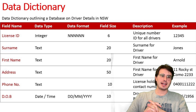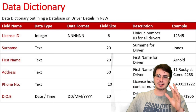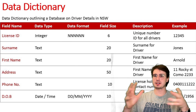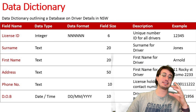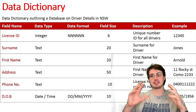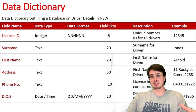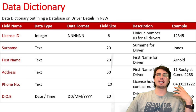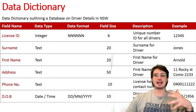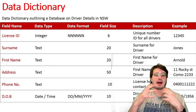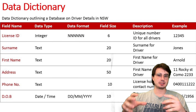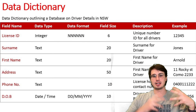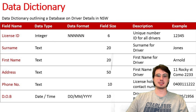Hey y'all, Data Guy here, and today I'm coming at you with yet another viewer request video, this time uncovering and going through the concept of a data dictionary. Data dictionaries are really the idea of having a dictionary that has all the information around your data — a centralized authoritative reference that describes the meaning, the structure, and the rules of data across an organization's systems.